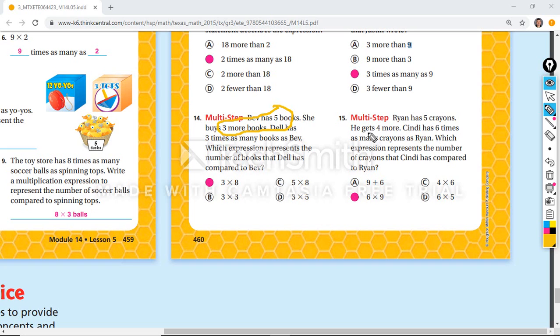Ryan has five crayons. He gets four more. So you add those two. So now he has nine. And Cindy has six times as many crayons. So here you go. Six times as many. The key is adding those two.